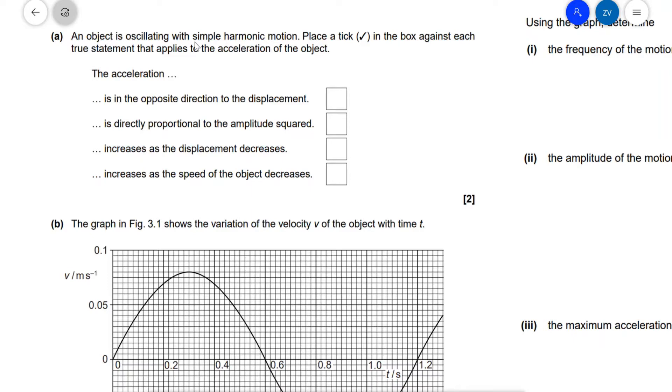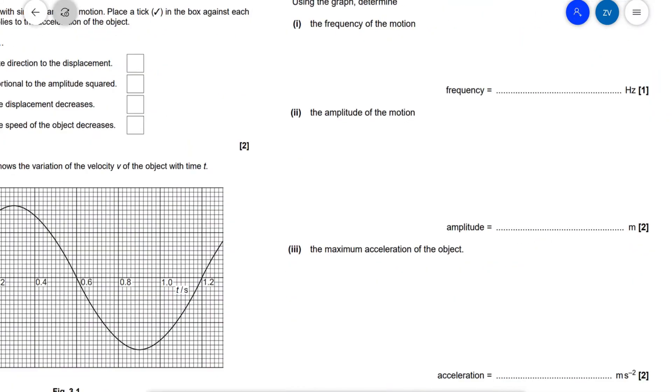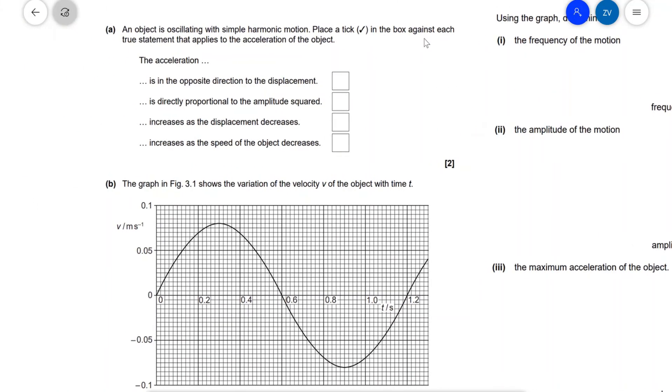For the first part we have an object which is oscillating with SHM. Place a tick in the box against each statement that applies to the acceleration of the object. First of all, the acceleration is in the opposite direction to the displacement. This is true; in fact it is one of the defining characteristics of simple harmonic motion so we can go ahead and place a tick there.